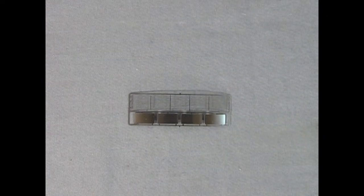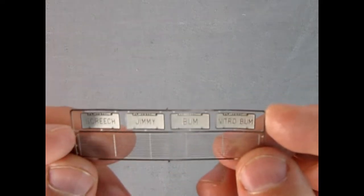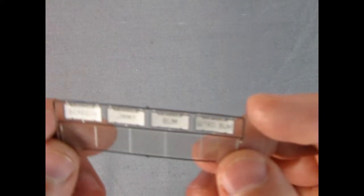Here we have the photo etch grille and also we have our license plates on here. I will turn this over just so you can see. Okay so one of them says Screech, the other says Jimmy, then we've got one that says Bum and then we've got one that says Nitro Bum. And that's what the little gremlin guy's name is, is Nitro Bum.